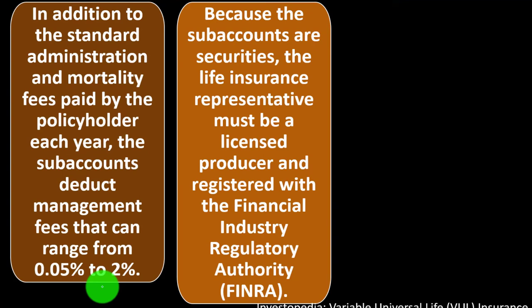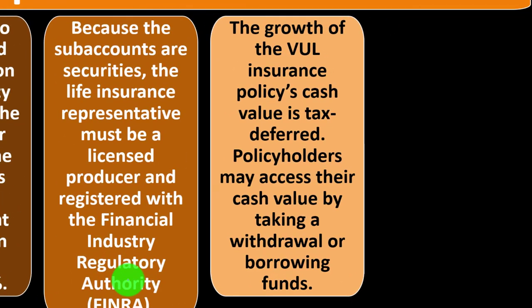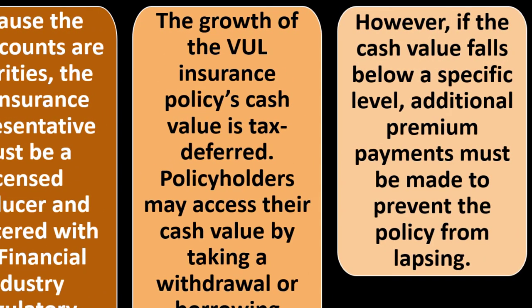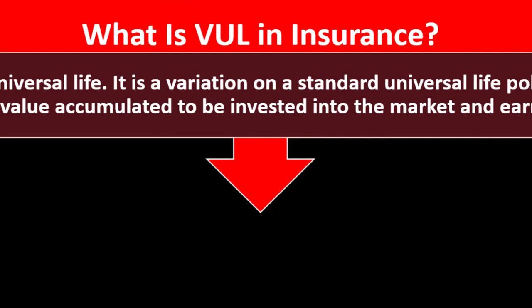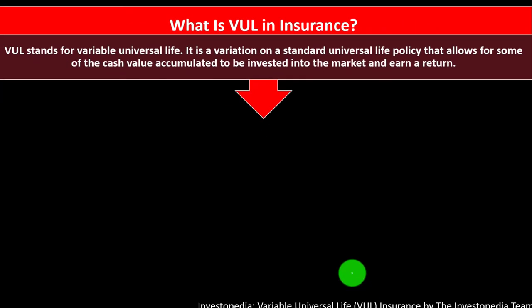Because the sub-accounts are securities, the life insurance representative must be a licensed producer and registered with the Financial Industry Regulatory Authority (FINRA). The growth of VUL insurance policy cash value is tax deferred. Policyholders may access their cash value by taking a withdrawal or borrowing funds; however, if the cash value falls below a specified level, additional premium payments must be made to prevent the policy from lapsing. In summary, VUL — Variable Universal Life — is a variation on a standard universal life policy that allows some of the accumulated cash value to be invested in the market.